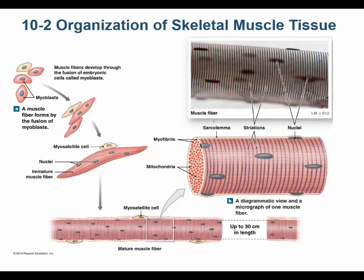Embryonically, myoblasts fuse together to make an immature myofiber. This explains why myofibers are multinucleated — if you fuse three or more cells together, you end up with one multinucleated myofiber. That's how we embryonically form our muscle cells from the fusion of myoblasts.